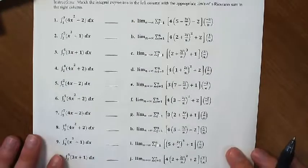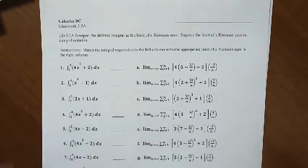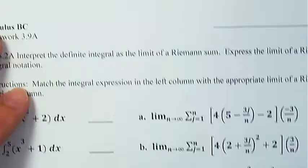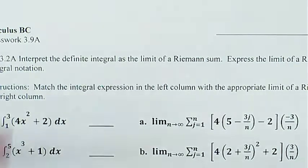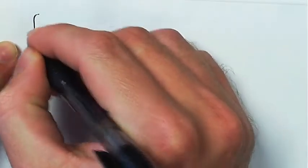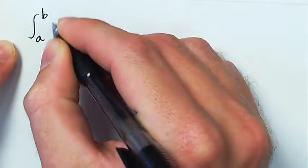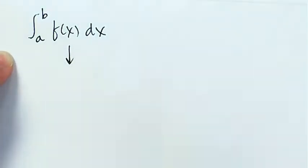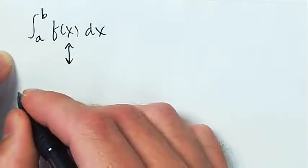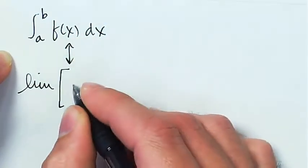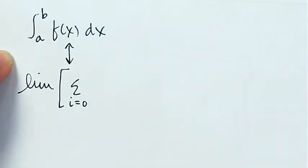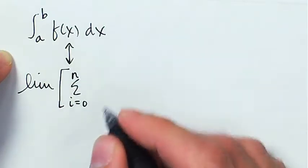So first I want to just, maybe you just watched my video about writing it as a limit of a Riemann sum, but remember that if I've got the integral from a to b of f(x) dx, I need to translate that into the limit of a Riemann sum. The Riemann sum is going to be, i is going to run from 0 or potentially 1, depending on whether it's the limit of a left Riemann sum or a right Riemann sum, up to n. n is the number of rectangles.